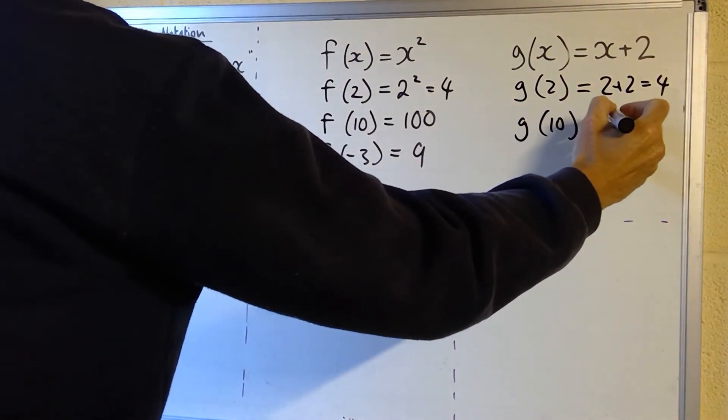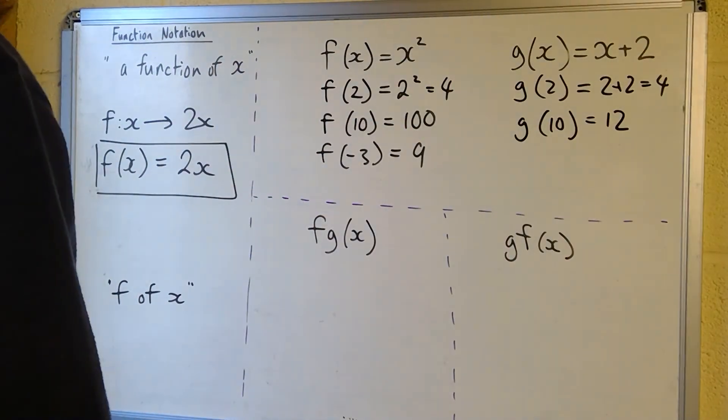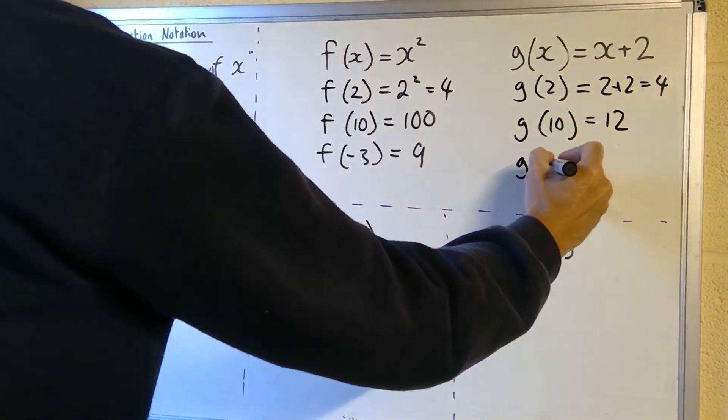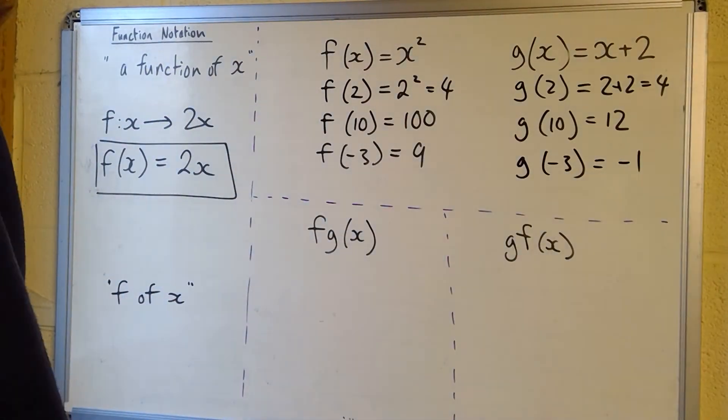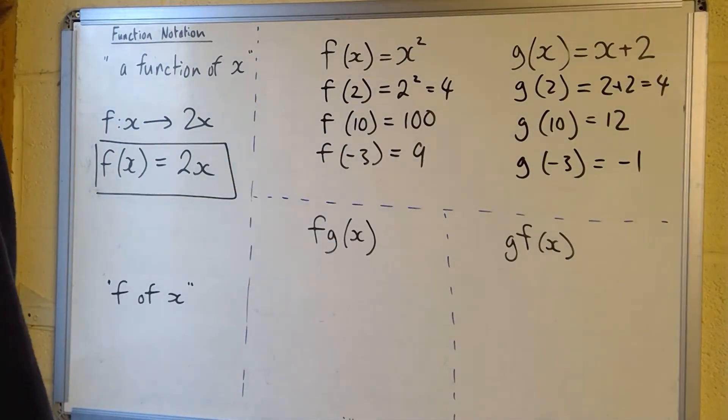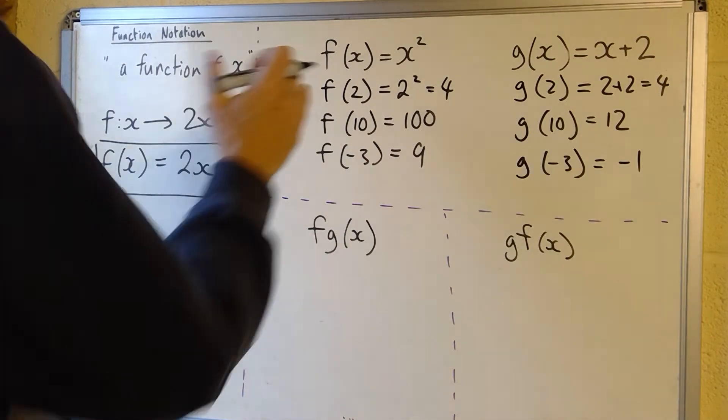g of 10 would be 12. I'm not showing the work in there, we can do that. g of negative 3 add on 2 would be negative 1. So really no new skills there, it's just substitution, but we're using this function notation that's what I want you to get used to.